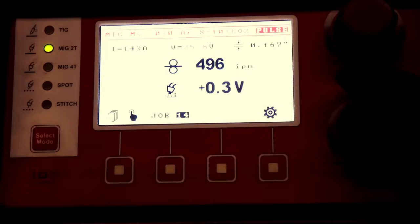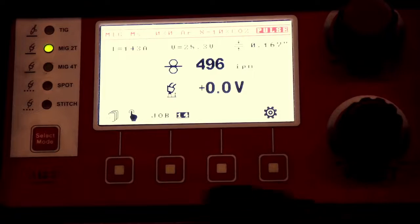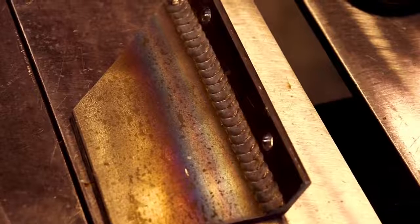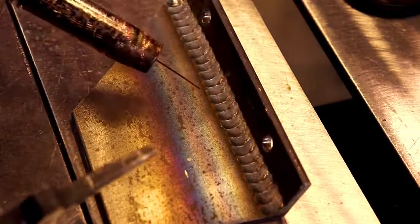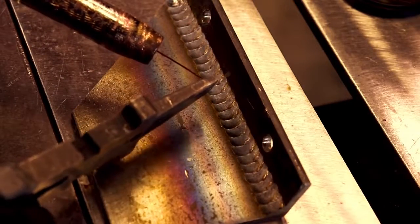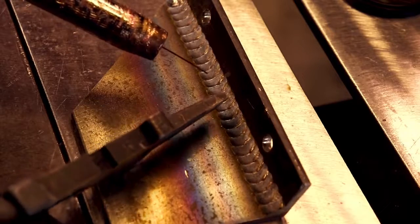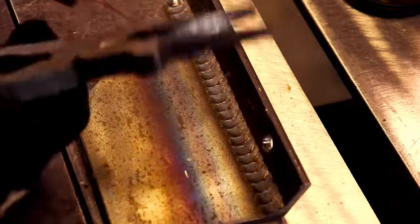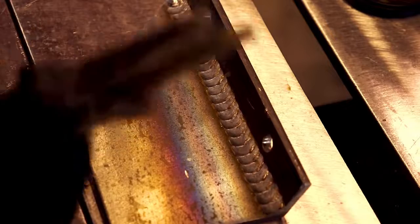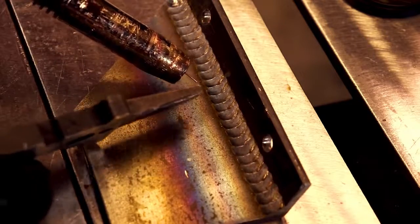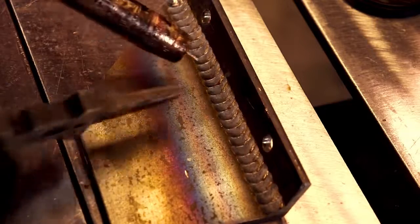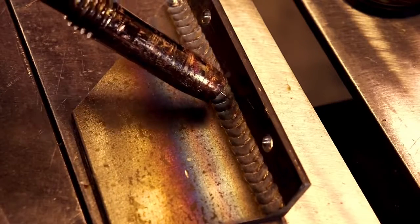And what this also does is help control how tight or how wide your bead is. So let's say you're running a fillet. You might want a shorter arc length or a tighter arc length. That way you can get into the root better. But on an outside corner, you might want a bead that helps wrap those corners around. And if you have a gap, you might want a wider or a longer arc length. That way it doesn't punch in through that gap. It'll actually wrap around it.